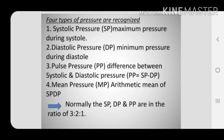Four types of blood pressure are recognized: systolic pressure, diastolic pressure, pulse pressure, and mean pressure. The systolic and diastolic pressure are the actual pressures which exist and are measured as blood pressure readings. The remaining two — pulse pressure and mean pressure — are derived from the systolic and diastolic pressure.